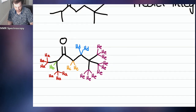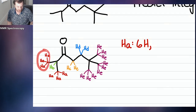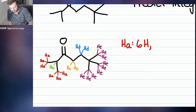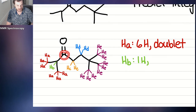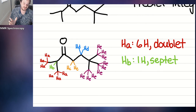Now let's predict. HA: integration is six H. How many neighbors does HA have? Just one — HB. So HA appears as a doublet. For HB: integration is one H. How many neighbors does HB have? No hydrogens on the carbon above, but there are six hydrogens on neighboring carbons — the six HA protons. So six plus one is seven — HB is a septet.